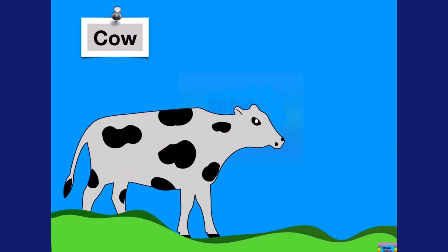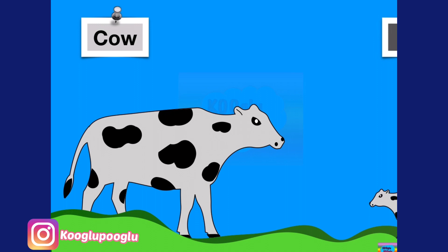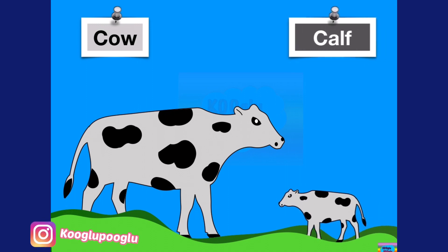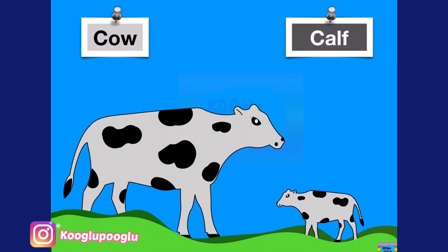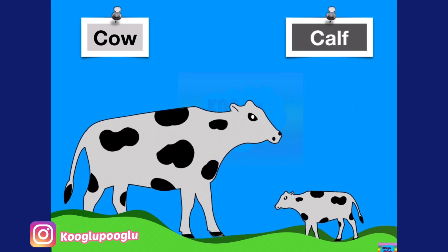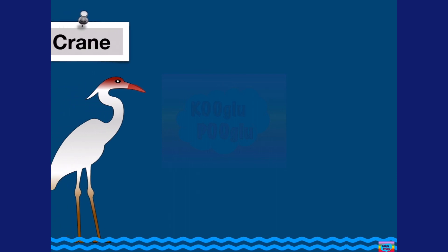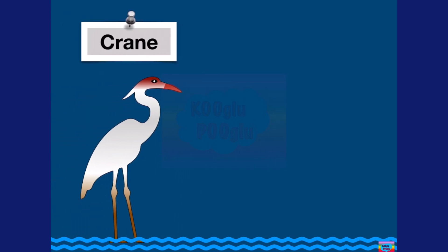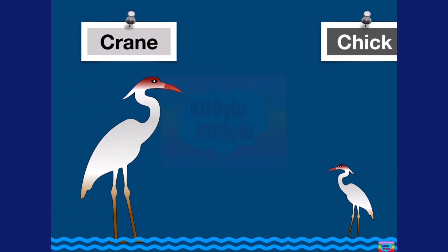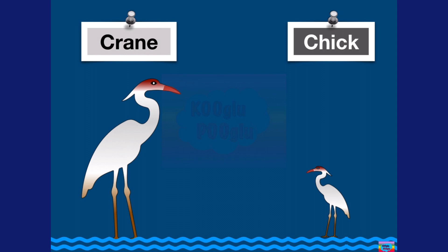Here we got a cow, and here we got a baby cow, which is also called a calf. Next we have a crane, and a baby crane is called a chick.